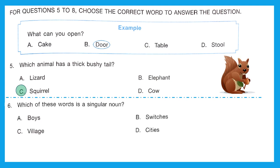Question 6, which of these words is a singular noun? Singular means single. Option A is boys, it's plural. Option B is switches, also plural. Option C is villages, it's singular. And option D is cities, again plural. The right answer is option C, village, which is a singular noun.